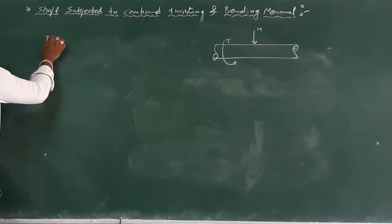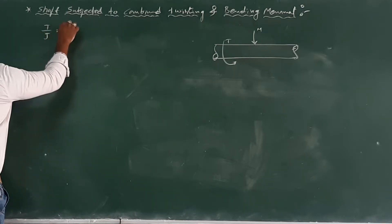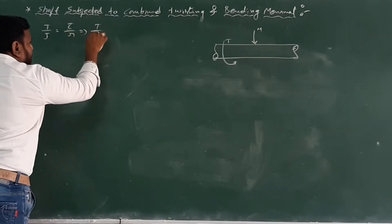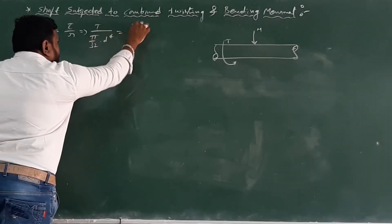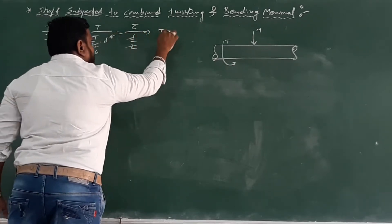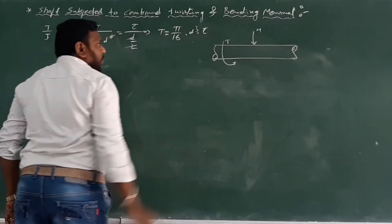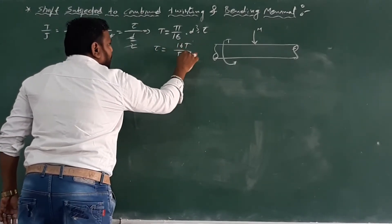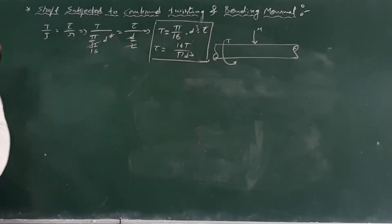The shear stress formula is: tau equals 16P divided by pi D cubed. So tau bar, the shear stress, is equal to 16P by D cubed. It is only this relation.